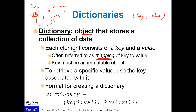To retrieve a specific value, you use the key associated with it. The format for creating a dictionary uses curly brackets — unlike lists which use square brackets. You create the curly brackets and then have a comma-separated set of key-value pairs: key one colon value one, key two colon value two. You can give the variable any meaningful name, like inventory_dictionary.